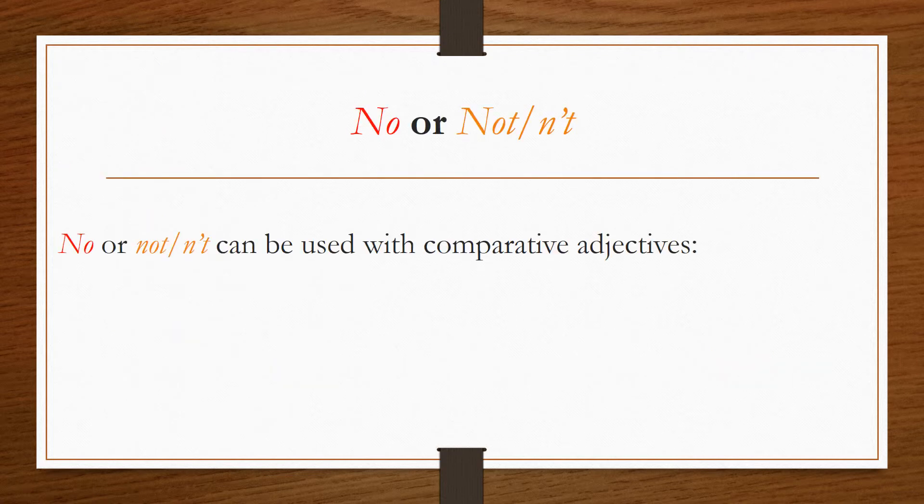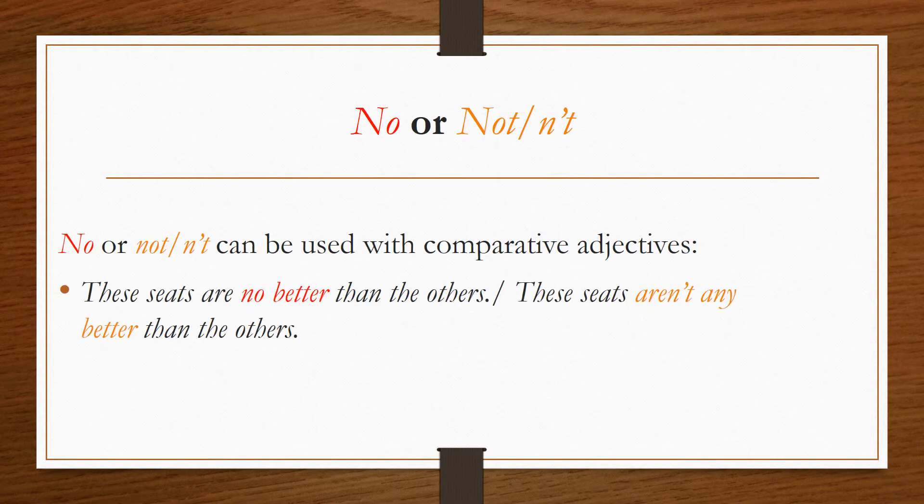No or not. No or not can be used with comparative adjectives. These seats are no better than the others. These seats aren't any better than the others.